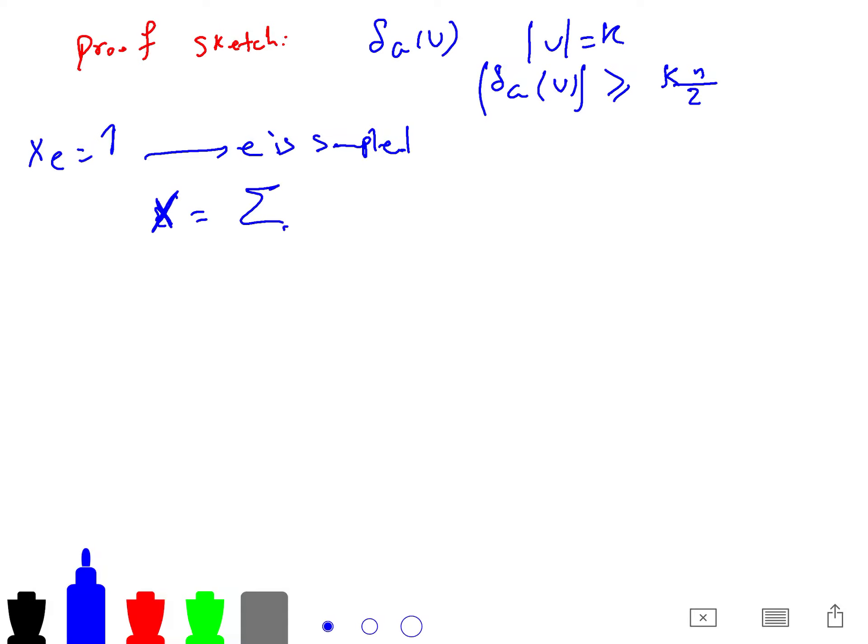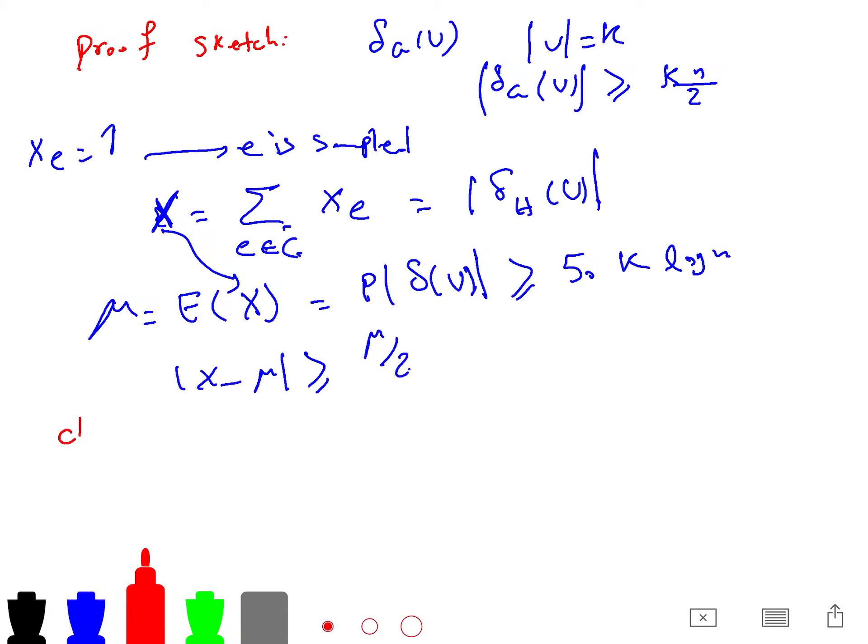And then because we are sampling, so we have a very interesting random variable. This is a trick that we use almost every time. Because we want to use Chernoff bound. And Chernoff bound uses a sum of some random variables. So this is equal to delta H of U. And then you calculate the expectation of this interesting random variable. Which is P times delta U, which is greater than 50 K log n. And we say that a cut fails if X minus mu is greater than mu over 2.